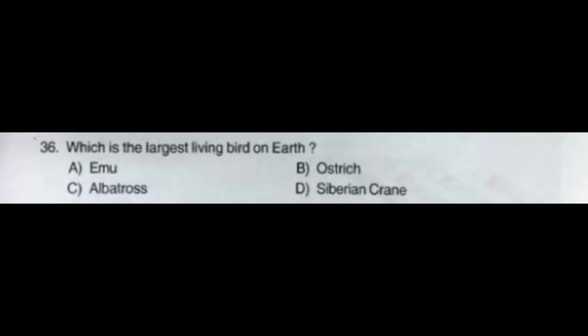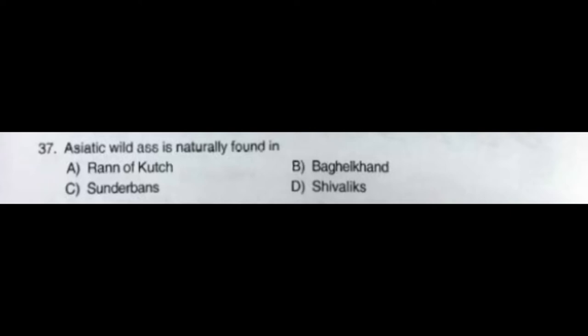Question number thirty-six: Which is the largest living bird on earth — option A: emu, option B: ostrich, option C: albatross, option D: Siberian crane. The correct answer is option B: ostrich. Question number thirty-seven: Asiatic wild ass is naturally found in — option A: Rann of Kutch, option B: Baghelkhand, option C: Sundarbans, option D: Shivaliks.